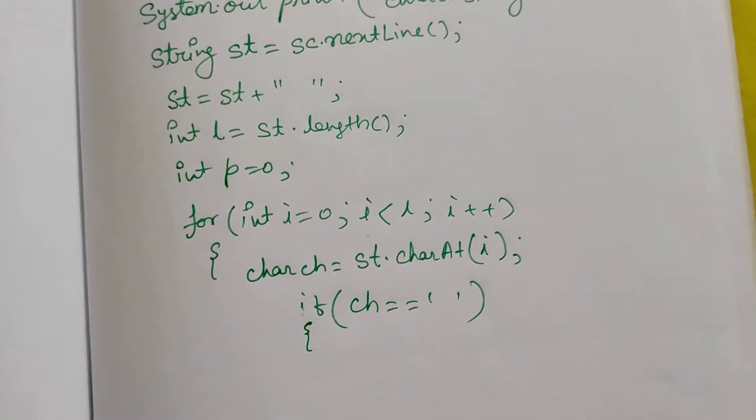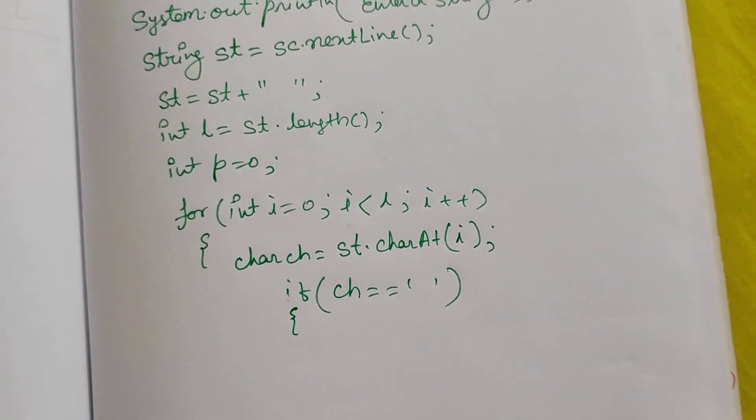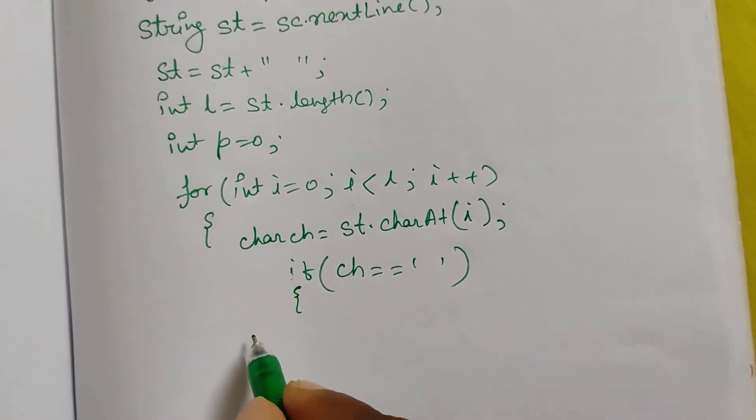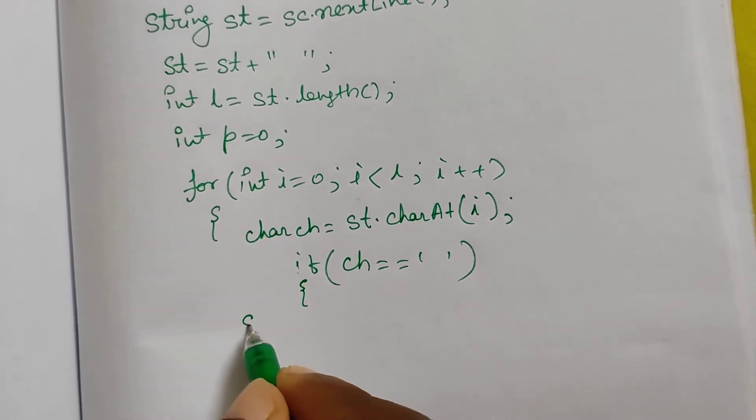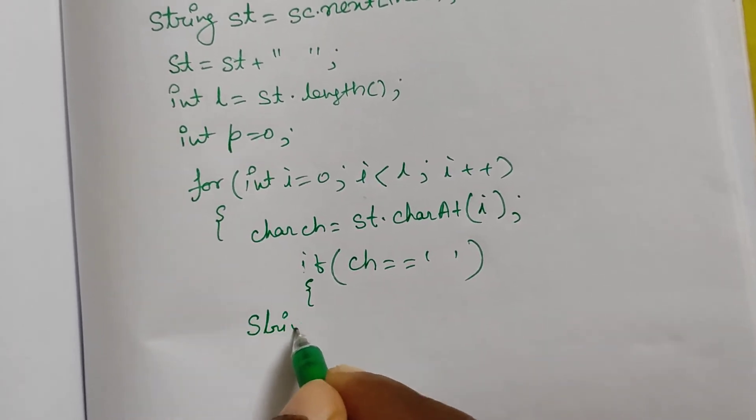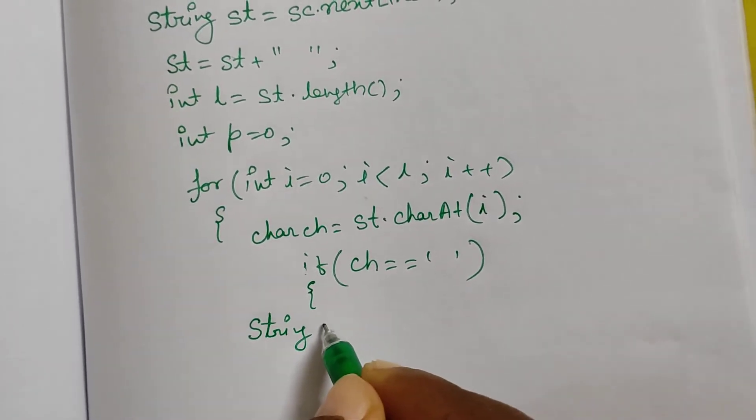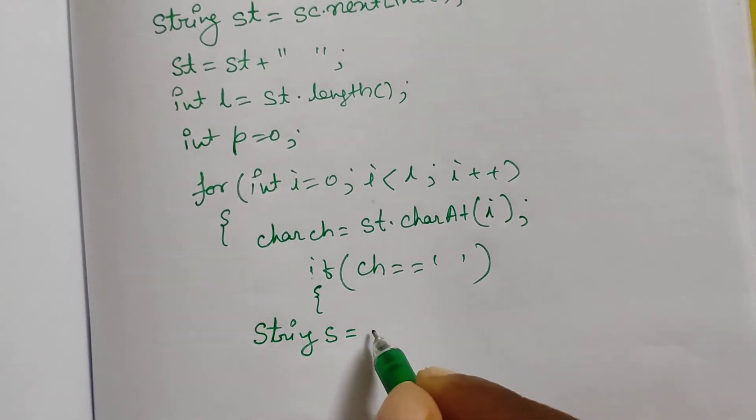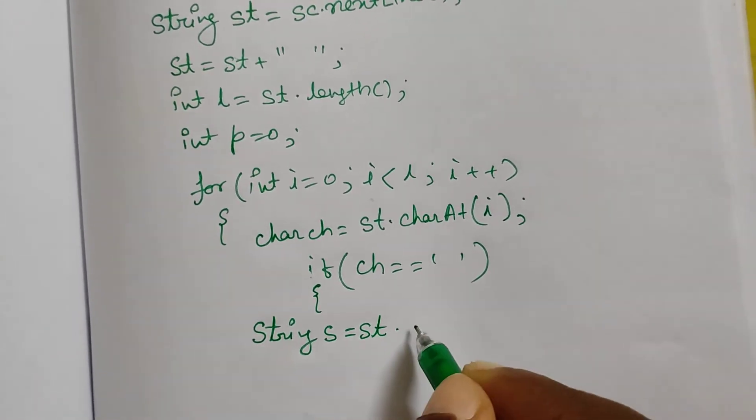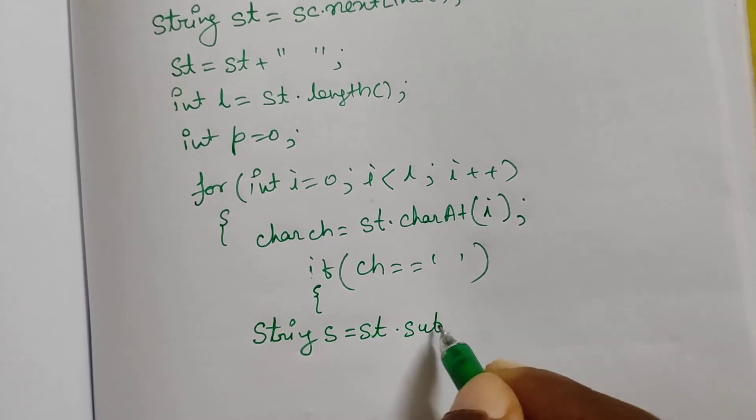Then what we will do? We will cut the word. To store that word, we will take one string: String s = st.substring(). Substring function.